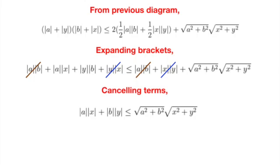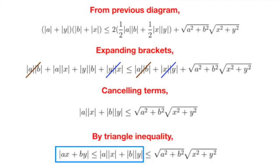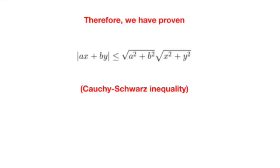Doing so allows us to obtain modulus a times modulus x plus modulus b times modulus y is less than the square root of a square plus b square multiplied by square root x square plus y square. And finally, we appeal to the triangle inequality, and doing so, we obtain the Cauchy-Schwarz inequality.